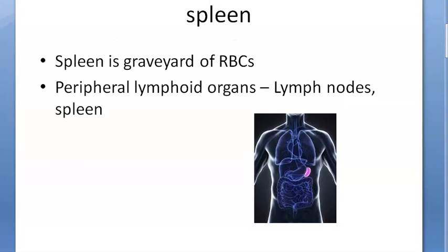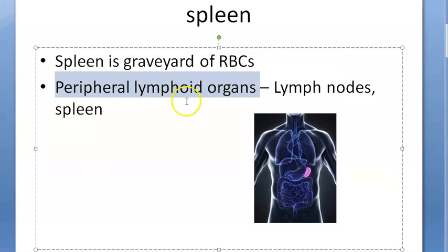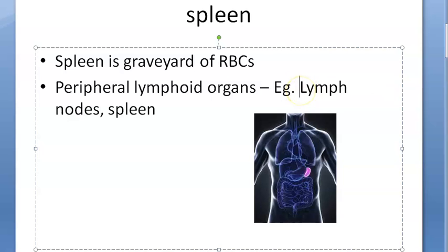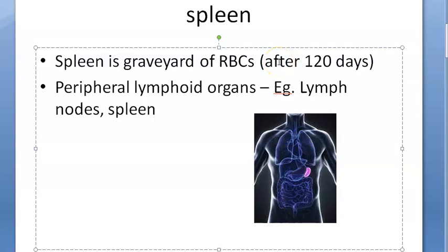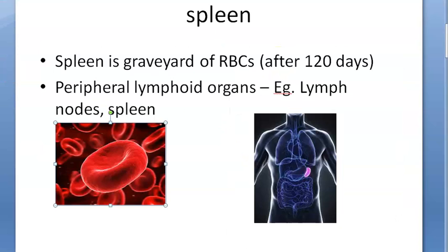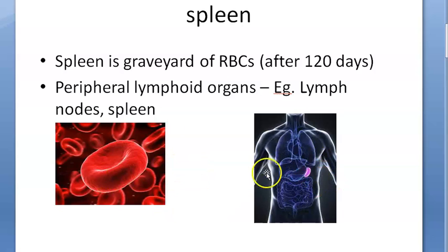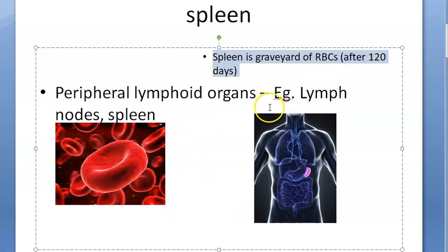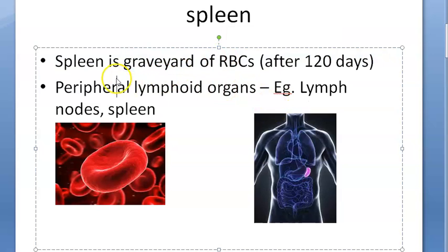The spleen is a peripheral lymphoid organ — another example of a peripheral lymphoid organ is the lymph node. The spleen is called the graveyard of RBCs: after 120 days of life, a red blood cell becomes weak. As it passes through the spleen, if it is healthy the spleen lets it go, but if it is weak and old, the spleen destroys it. So the spleen is the final destination for your RBCs.